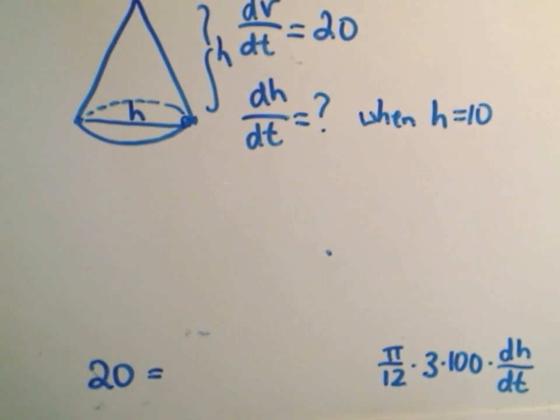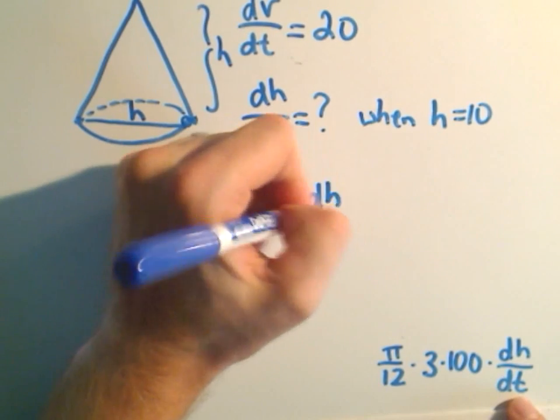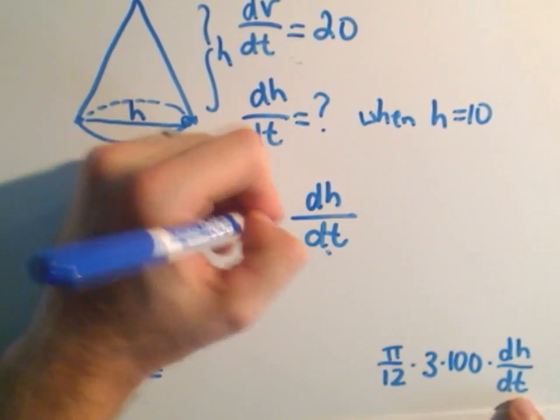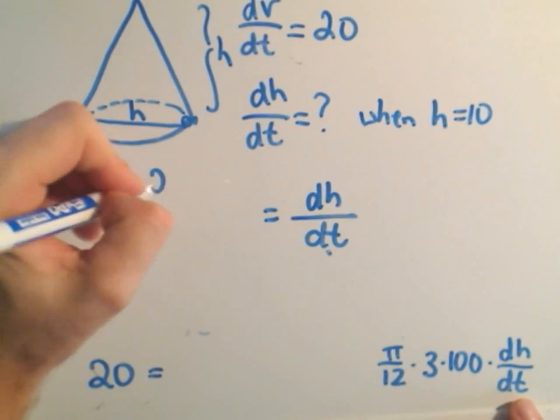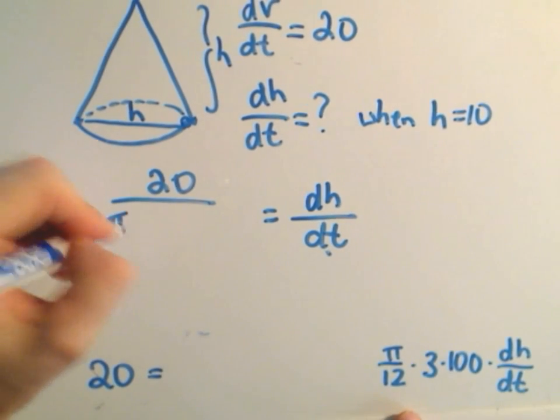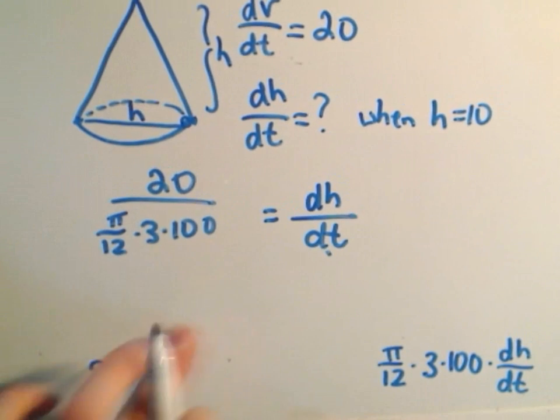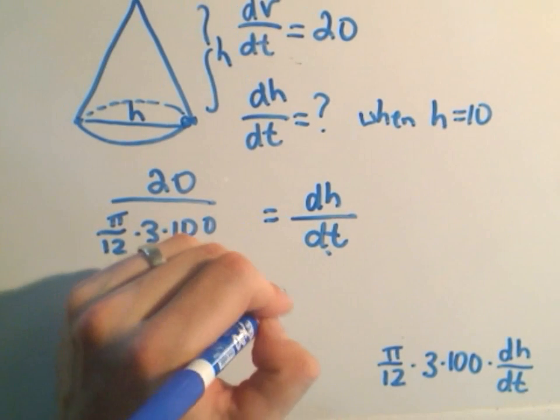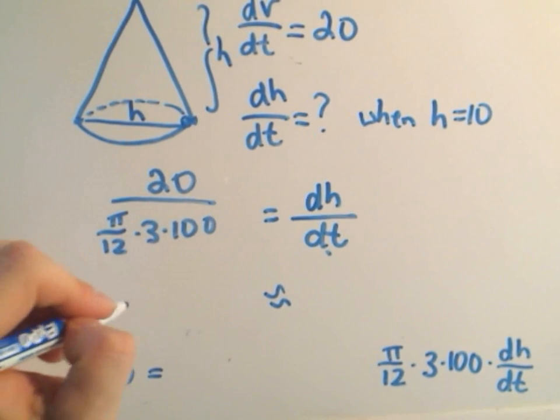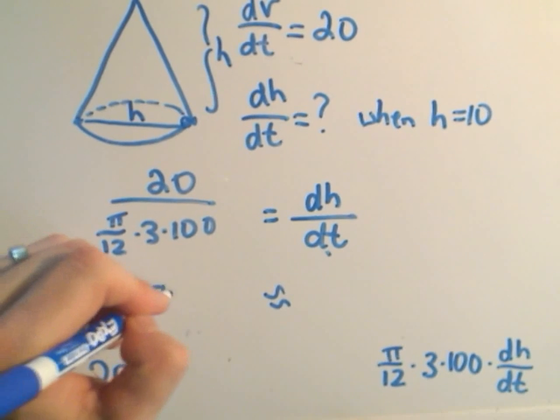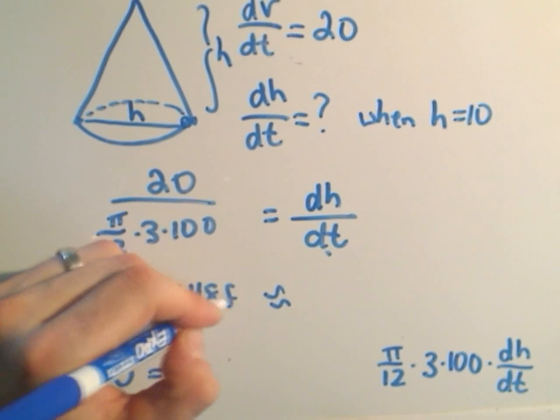It says that dH/dt is going to be equal to 20 on the left divided by π/12 times 3 times 100. And I calculated this and I got this roughly to be equal to 0.254648 feet per minute.